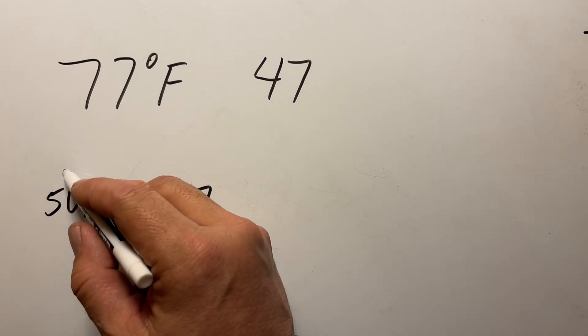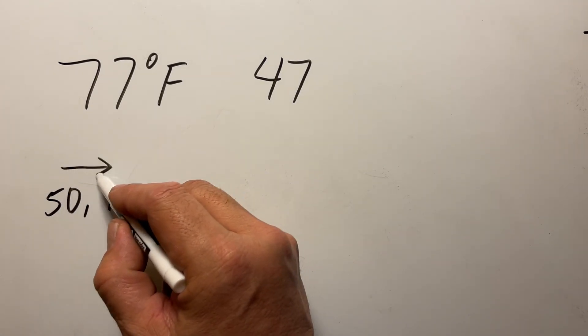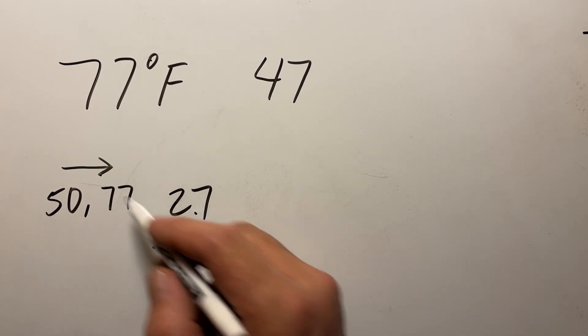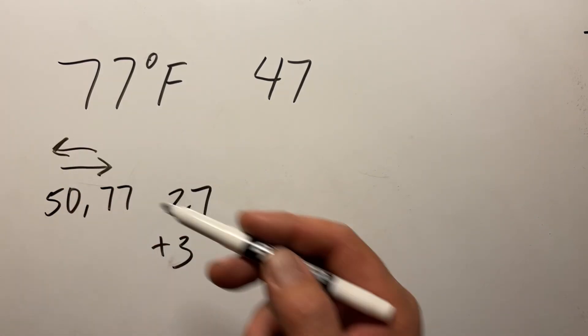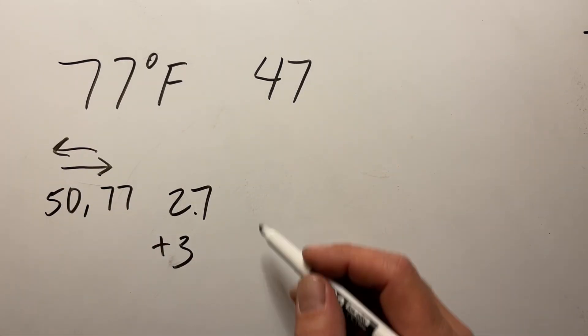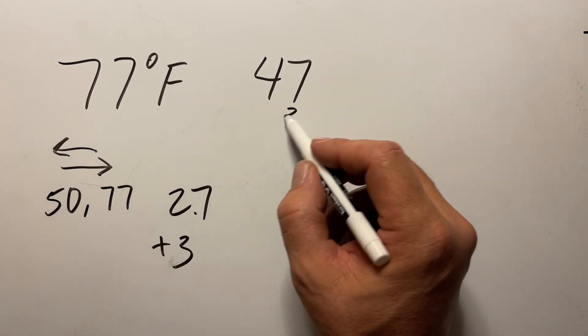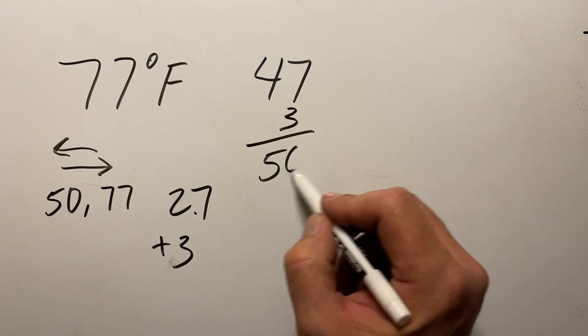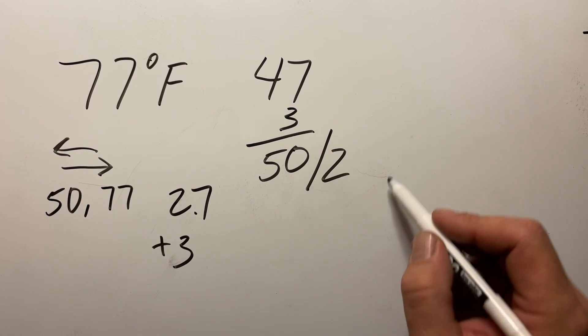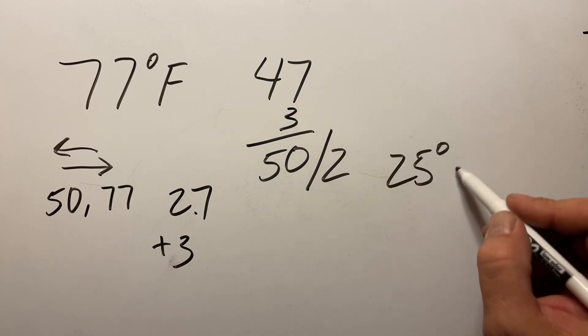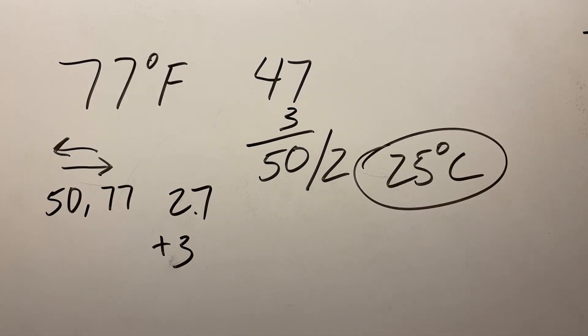Now because this number goes up, we're going to put that as positive. If it went the other way, if it was less than 50, then we would make it negative. We would subtract it from this answer. So we're going to take 3 and add it to this answer, which is 50, and now we'll divide it by 2, and that gets us 25 degrees Celsius, which is actually the perfect conversion for this particular temperature.